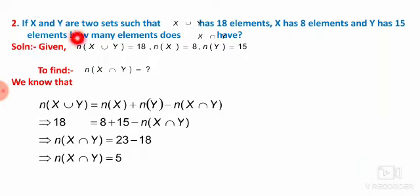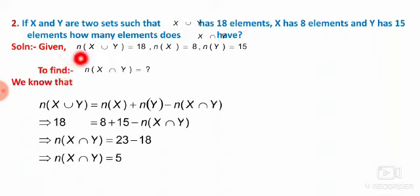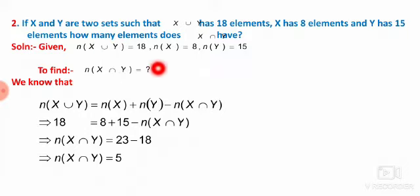Similar example: if X and Y are two sets such that N of X union Y is 18, N of X is 8, and N of Y is 15, how many elements does X intersection Y have? Given N of X union Y equals 18, N of X equals 8, N of Y equals 15, find N of X intersection Y. We use the same formula: N of X union Y equals N of X plus N of Y minus N of X intersection Y.